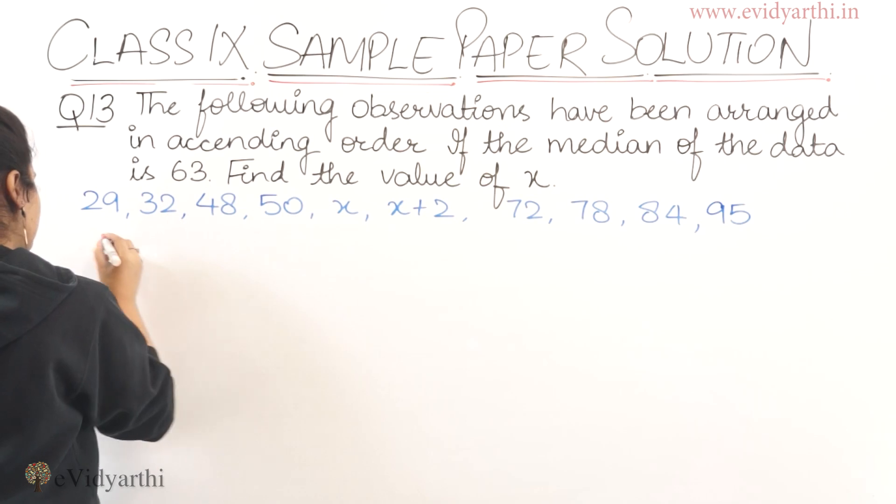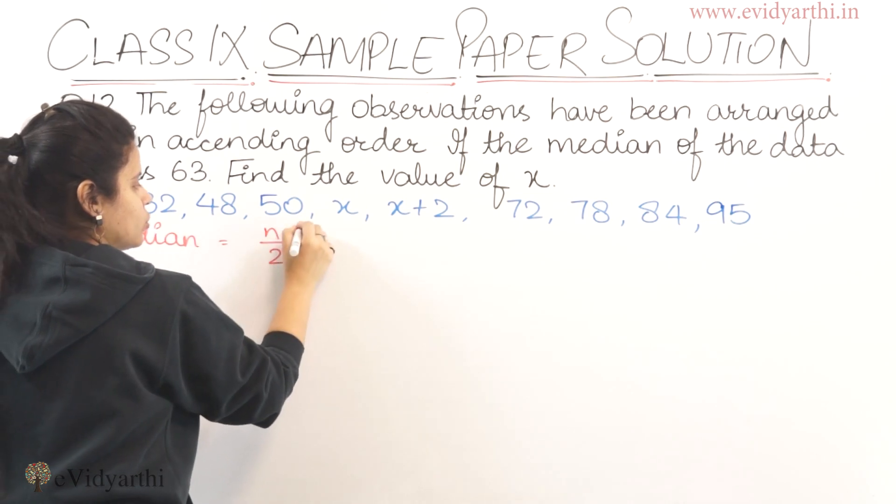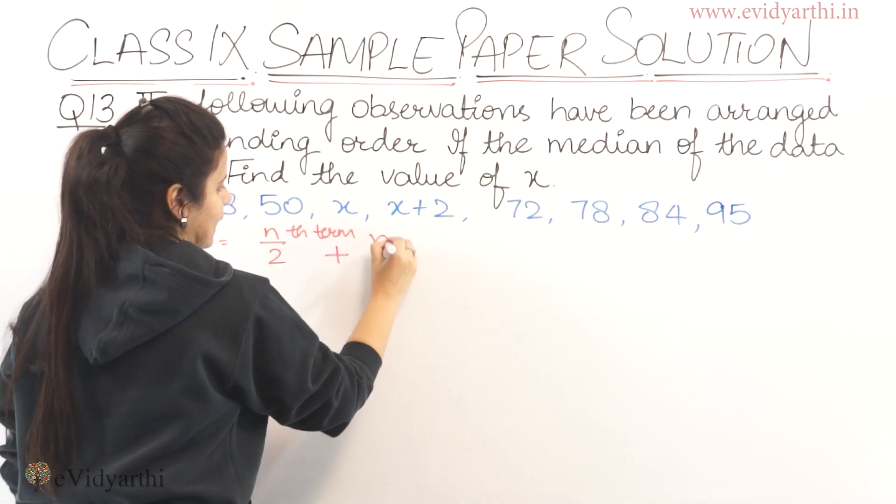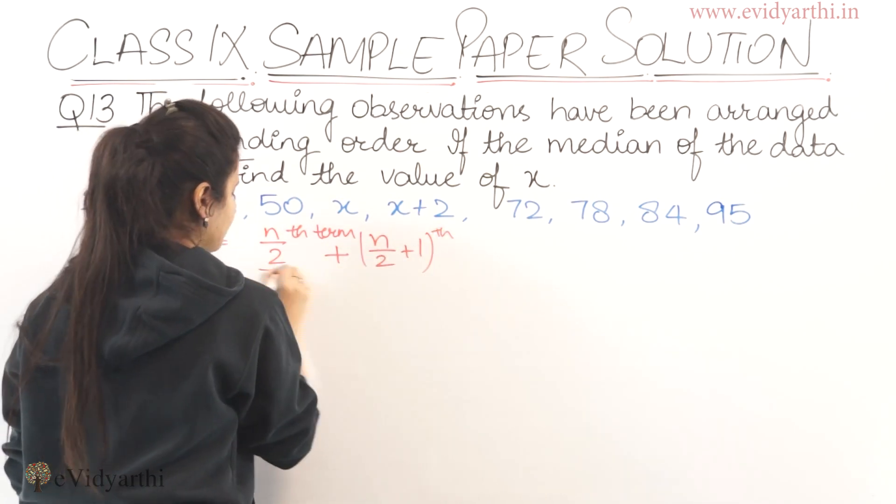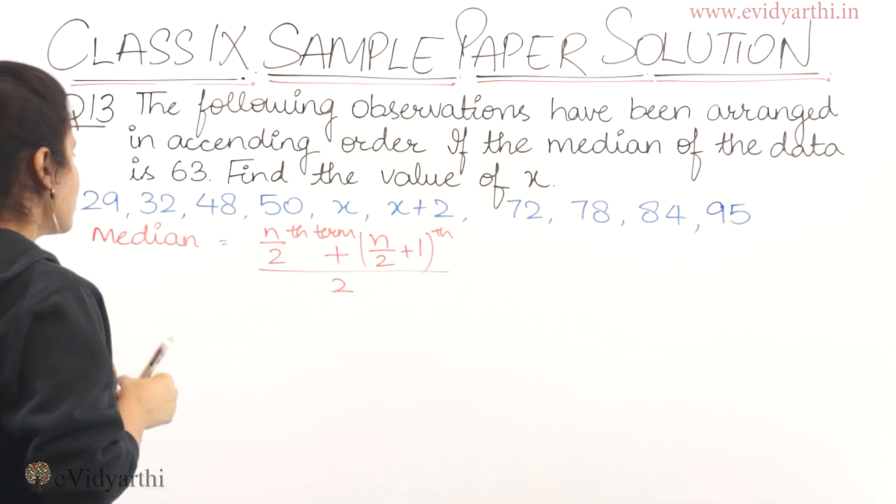So median will be equal to n/2 term plus n/2 plus 1 term, whole upon 2. So median is given to be 63.